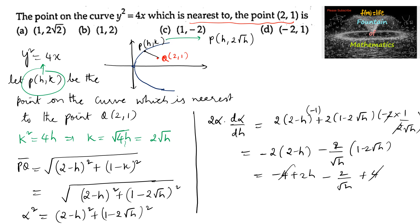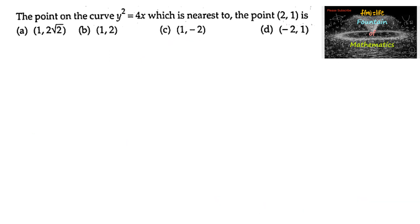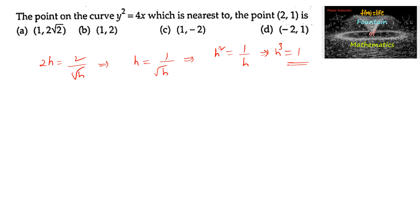For minima or maxima, let dα/dh = 0. We can write 2h - 2/√h = 0, or 2h = 2/√h, which implies h = 1/√h. Squaring both sides: h² = 1/h, so h³ = 1, therefore h = 1.